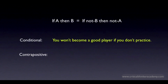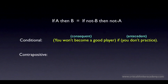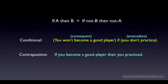For our last example, let's mix it up. Here's a conditional: you won't become a good player if you don't practice. Now it's written with the if in the middle, so to write the contrapositive, you have to make sure you've got the antecedent and the consequent right. The if rule says that whatever follows the if is the antecedent, so we know the antecedent is 'you don't practice.' The consequent is 'you won't become a good player.' Negating the consequent, you get 'you will become a good player.'